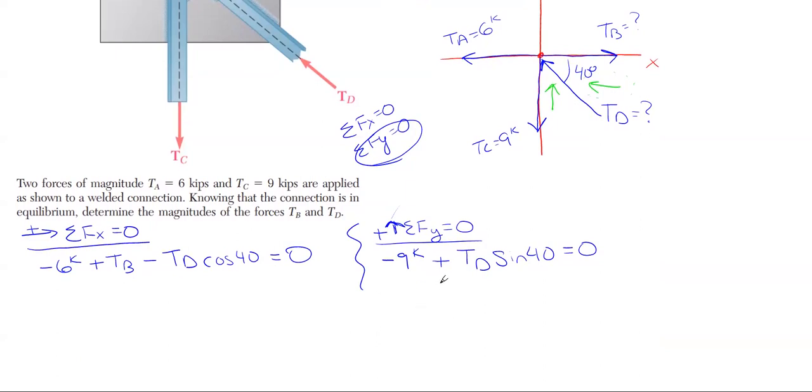Looking at the Y equation, I can solve for TD. It's the only unknown in there. Just rearrange, and we have TD equals 9 kips divided by the sine of 40, and that gives me exactly 14 kips in that upward left direction.